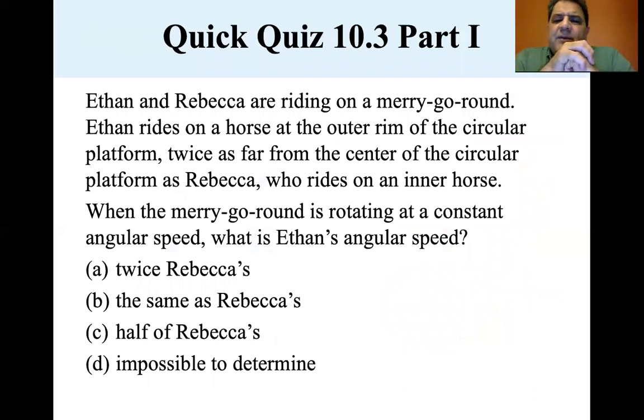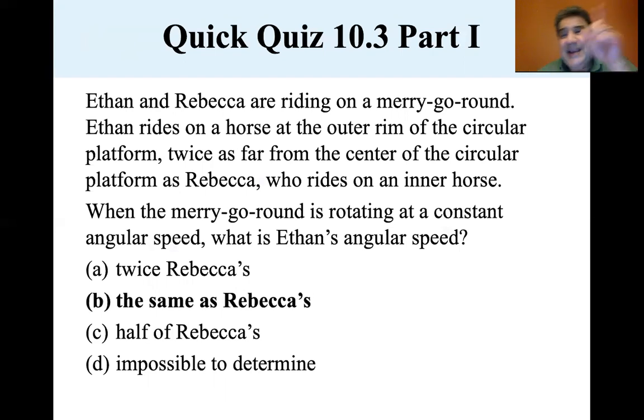Ethan and Rebecca are riding on a merry-go-round. Ethan rides on a horse at the outer rim of the circular platform twice as far from the center of the circular platform as Rebecca, who rides on an inner horse. When the merry-go-round is rotating at a constant angular speed, what is Ethan's angular speed? Notice the question, constant angular speed, what is Ethan's angular speed? So they're asking, what is omega? What is the angular velocity? Well, it's a constant angular speed. So they're both the same, the same as Rebecca's.